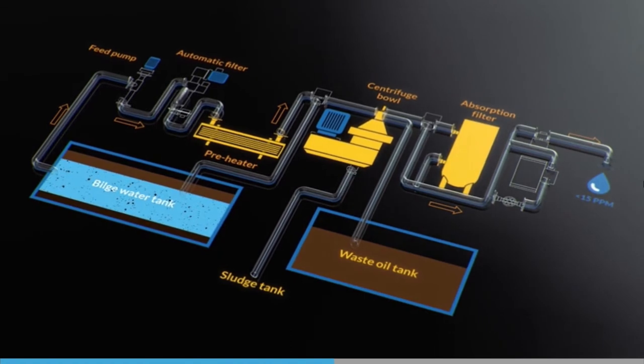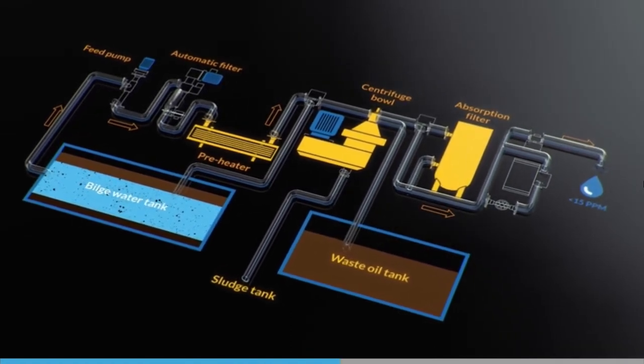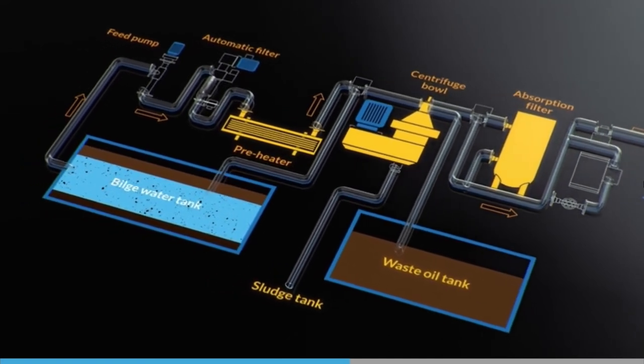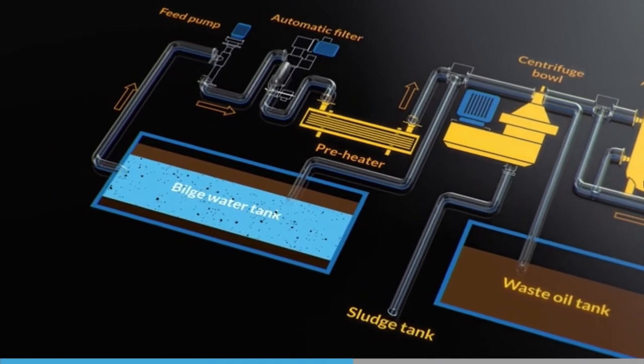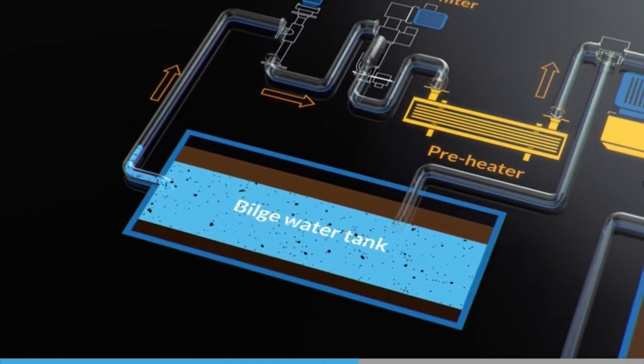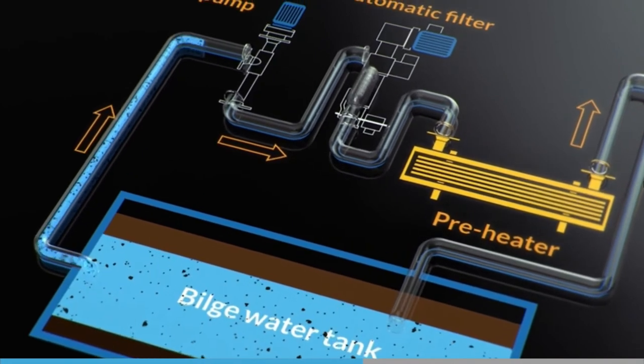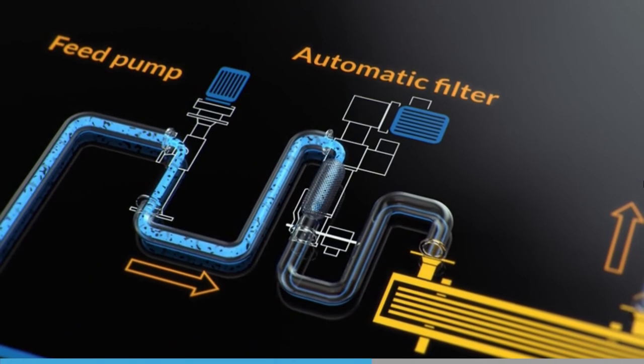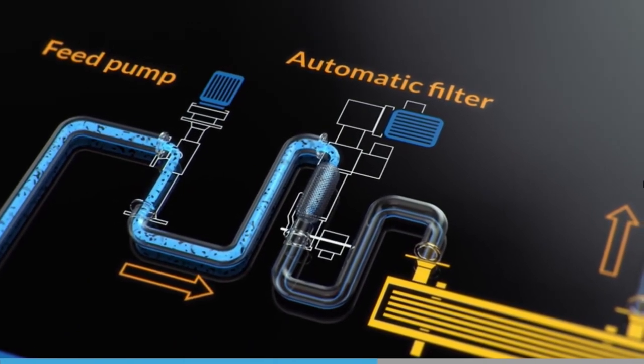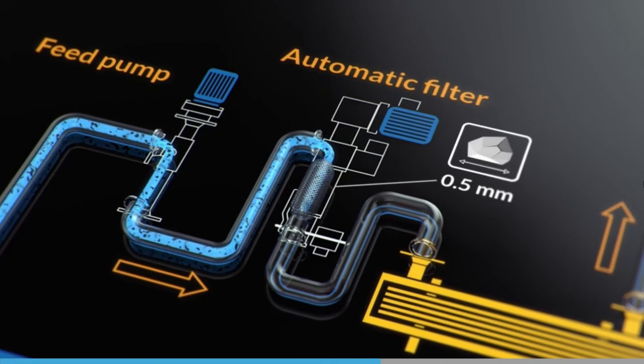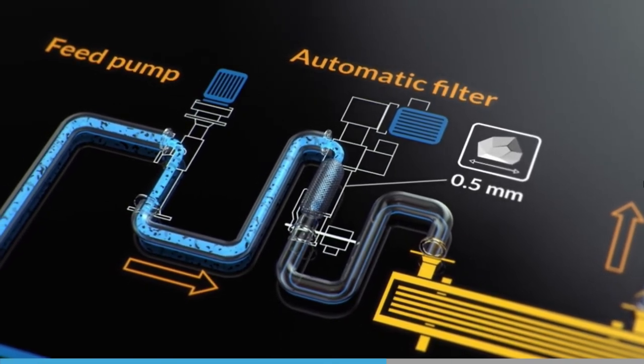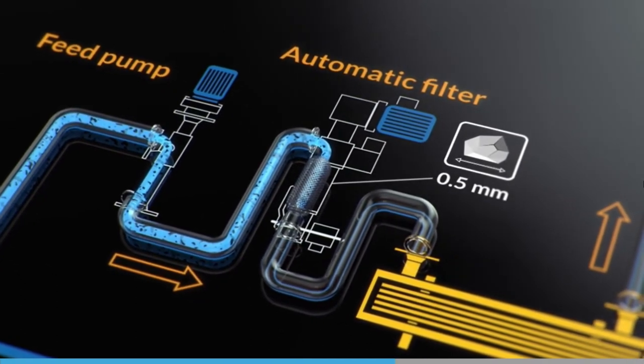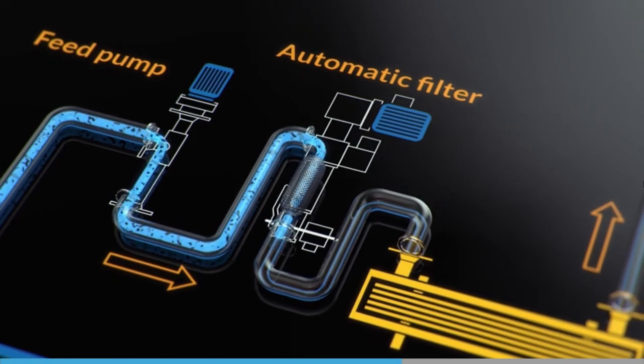Now that we've looked at the general principles, let's take a closer look at a typical centrifugal separator system. The bilge water separation process starts in the bilge tank. A variable rate feed pump supplies bilge water from the bilge tank to the separator via an automatic filter. This filter protects the disk stack of the separator bowl from solid particles larger than 0.5 mm. A differential pressure switch controls the cleaning of the automatic filter, and the rate of the feed pump is controlled by the oil in water monitor.